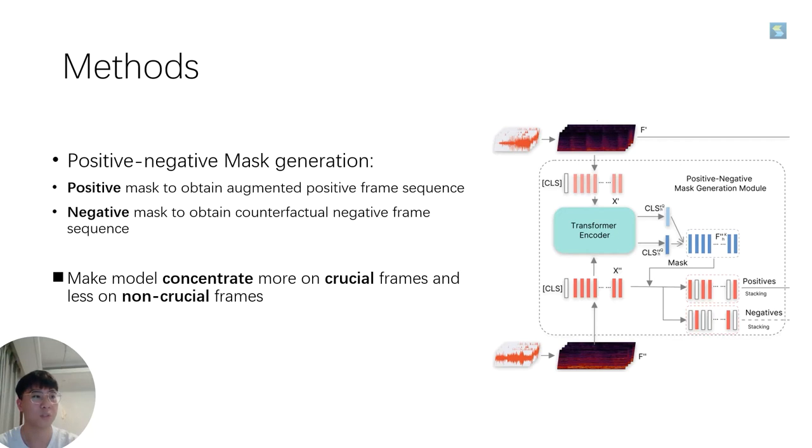The attention scores will be used to select a certain percentage of frames to be masked. We select the positions of frames with high scores to compose the positive mask and the remainder positions to compose the negative mask.